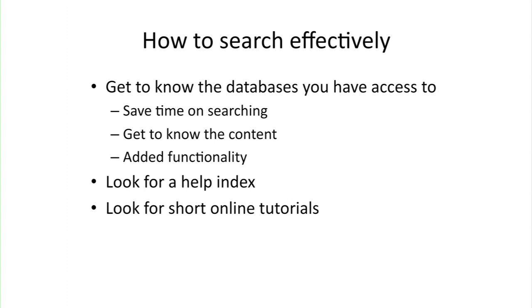So how do you search effectively? The best way is to get to know the databases you have access to. This will save time on your searching — you get to know the content of the database and, more importantly, what isn't included. You'll also find there's added functionality that helps you manage your results, save your results, and set up alerts to help you with current awareness. The best way to find out more about the database is to look at the front page and look for a help index. A lot of databases now have short tutorials under the help, or actually on the page you're looking at.